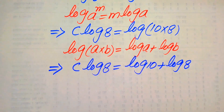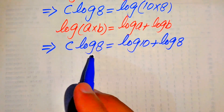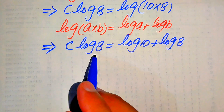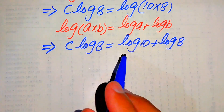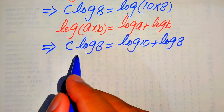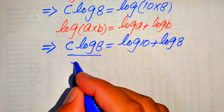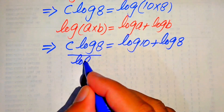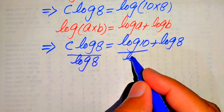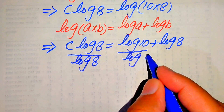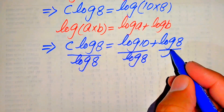Now in the next step, in order to find the value of C, we divide both sides by log 8. We divide each of these terms by log 8 in this form.